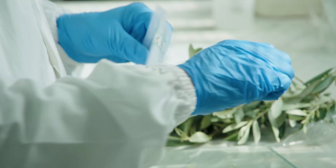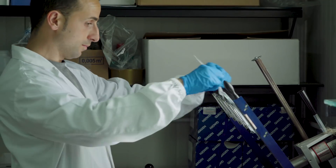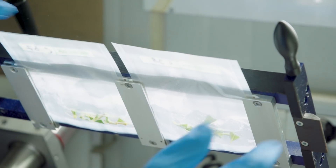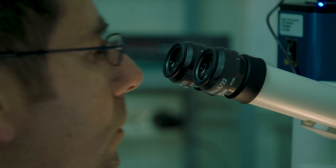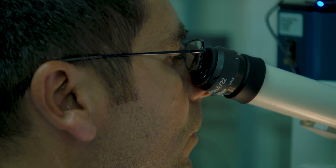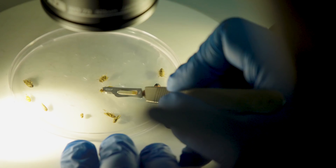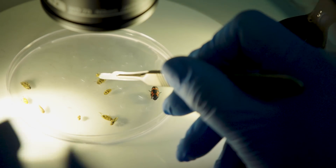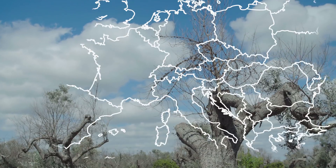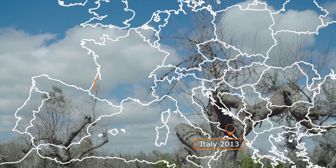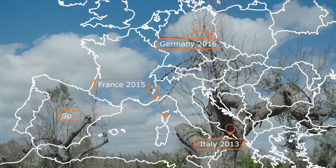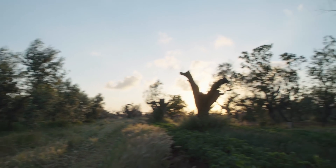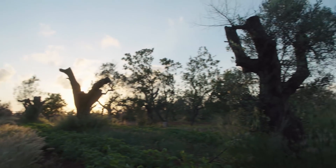The European Union has since provided funding for two larger research projects called PONTE and XF ACTORS. Scientists in Puglia are already making significant breakthroughs. As different strains of the pathogen appear in other parts of Europe, the threat to a huge variety of fruits and plants across the continent is very real. The situation is quickly evolving — each month is a month less to react.